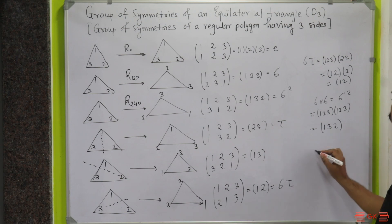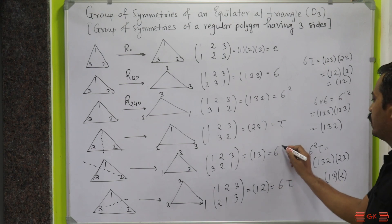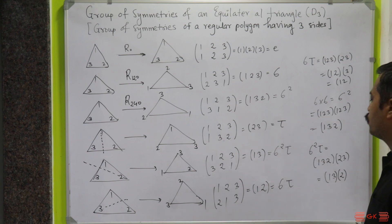Finally, let us calculate what is sigma squared tau. This is actually equal to—my sigma squared is (1,3,2) and my tau is (2,3)—so this is actually equal to: 1 maps to 1, 1 maps to 3, 3 maps to 2, 2 maps to 1. And then 2 will map to 2. And that is exactly this one, which is my sigma squared tau.